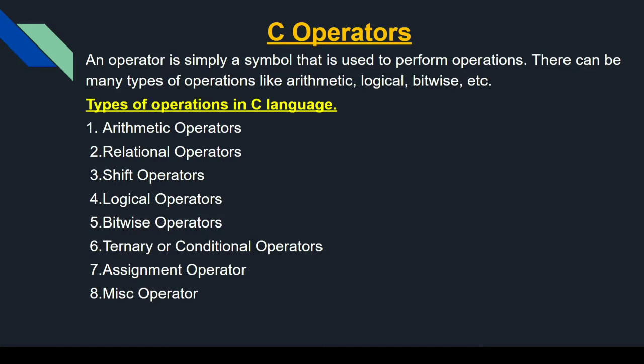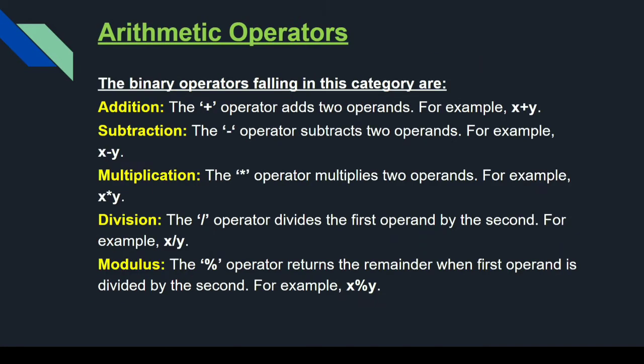Ternary and conditional operators, assignment operator, mix operators. Arithmetic operators — arithmetic operators में दो तरीके के operators हैं: binary operators and unary operators. Binary operator means: operand operator operand. Binary operators falling in this category are: addition, subtraction, multiplication, division, modulus.